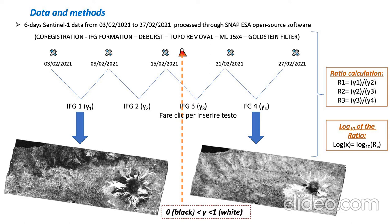As you can see here, there are two examples of the coherence map. We have the event marked by the dashed orange line, and we see the before and after coherence maps where coherence goes from zero to one — where zero is black and is really decorrelated, and one is white and is really highly correlated. What I did was calculate the ratio and, for better visualization, the log base 10 of the ratio.